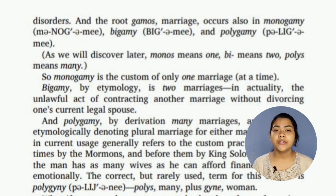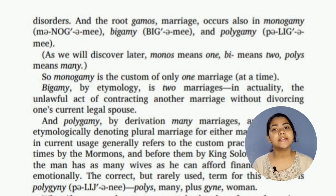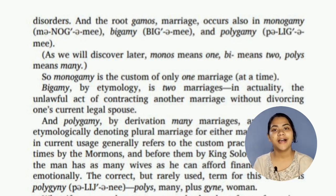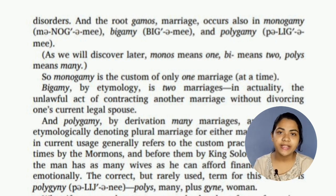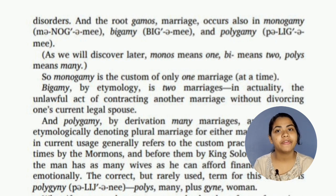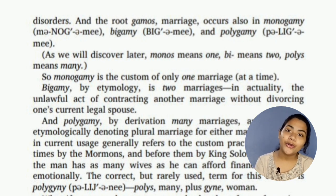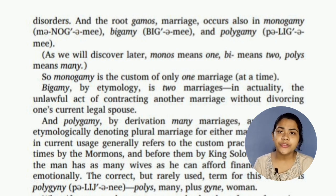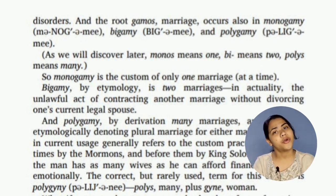Polyandry means two or more marriages for a female. So if a woman has two or more husbands — a form of marriage practiced in the Himalaya mountains of Tibet — the custom is called polyandry.